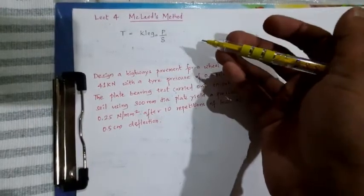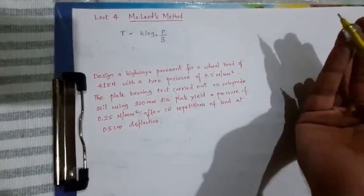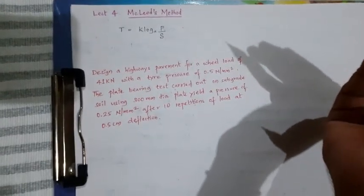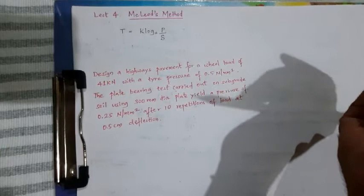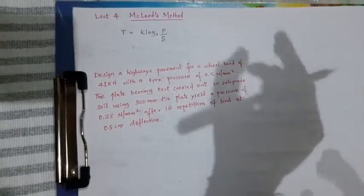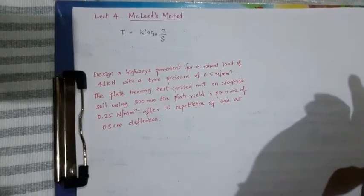Whatever the base course constant, it depends on whatever the loaded area. And the subgrade support, that is S, for design is calculated from the support measured or calculated for the 30 cm diameter plate at the 5 mm deflections at 10 repetitions.